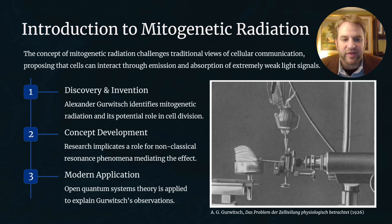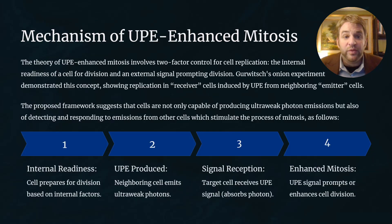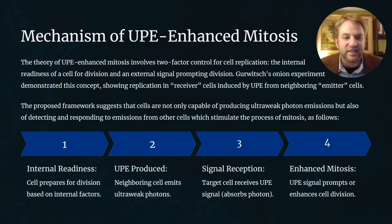It was then proposed, based on subsequent experiments, that it was actually the emission of light from the emitter root tip that induced enhanced mitosis — that is, cell division — in the receiver root. Further research in the development of the mitogenetic concept implicated a role for non-classical resonance phenomena in mediating the effect. The theory involves two-factor control for cell replication: the internal readiness of a cell for division, and an external signal prompting that division. Gurwitch's onion experiment demonstrates this concept, showing replication in receiver cells induced by ultra-weak photon emission from neighboring emitter cells.